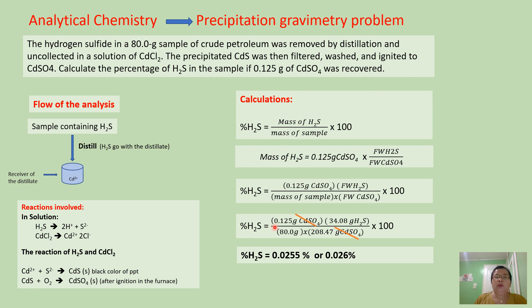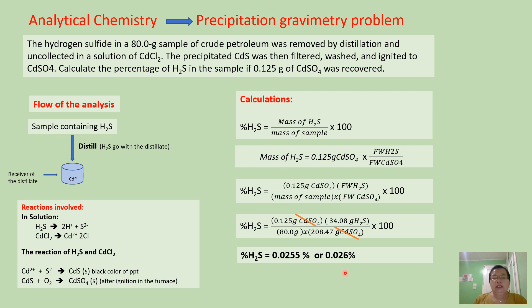The mass of our precipitate is 0.125 grams, times the formula mass of hydrogen sulfide, which is 34.08 g/mol, divided by the mass of sample (80.0 grams), times the formula mass of cadmium sulfate (208.47 g/mol). The grams of cadmium sulfate cancel, leaving grams of hydrogen sulfide over grams of sample, times 100. Simplifying with a calculator, the result is 0.0255%, which rounds to 0.026% hydrogen sulfide.